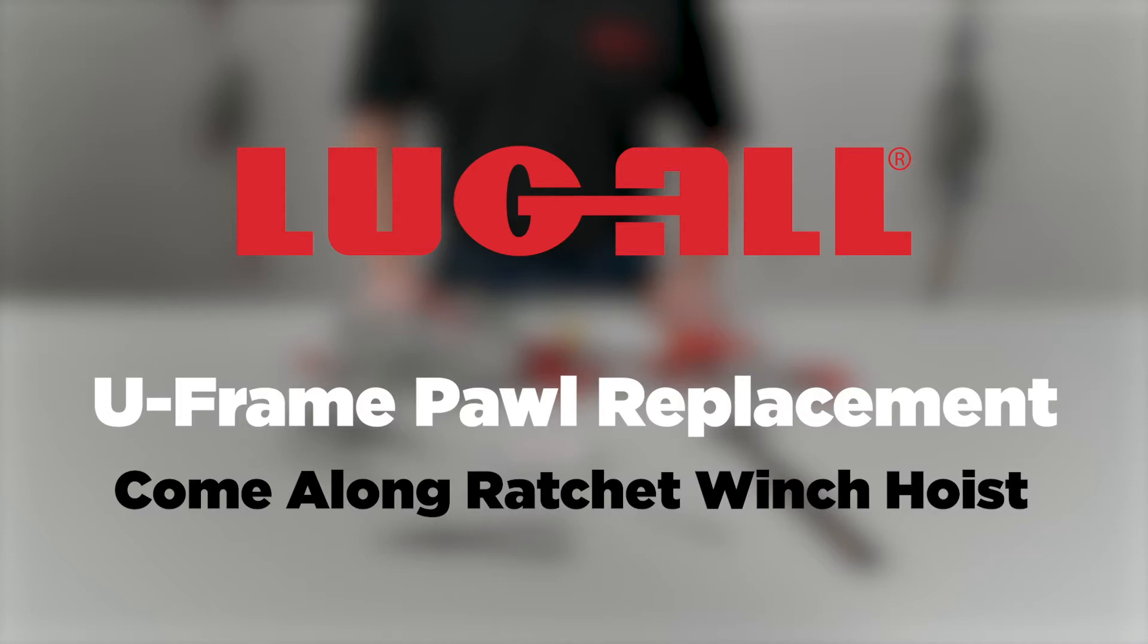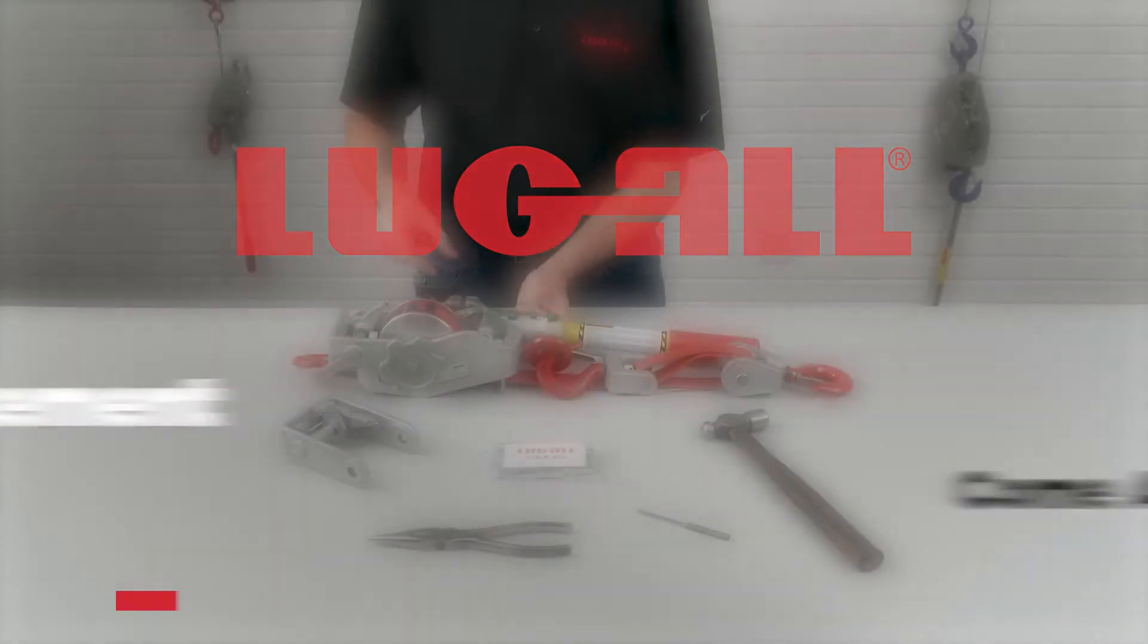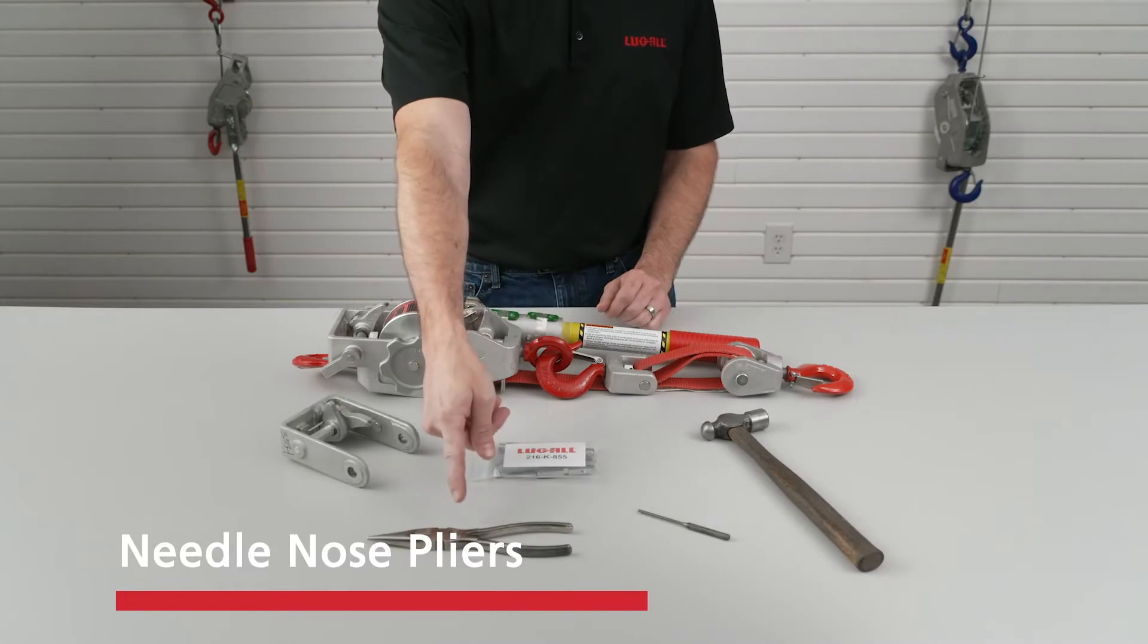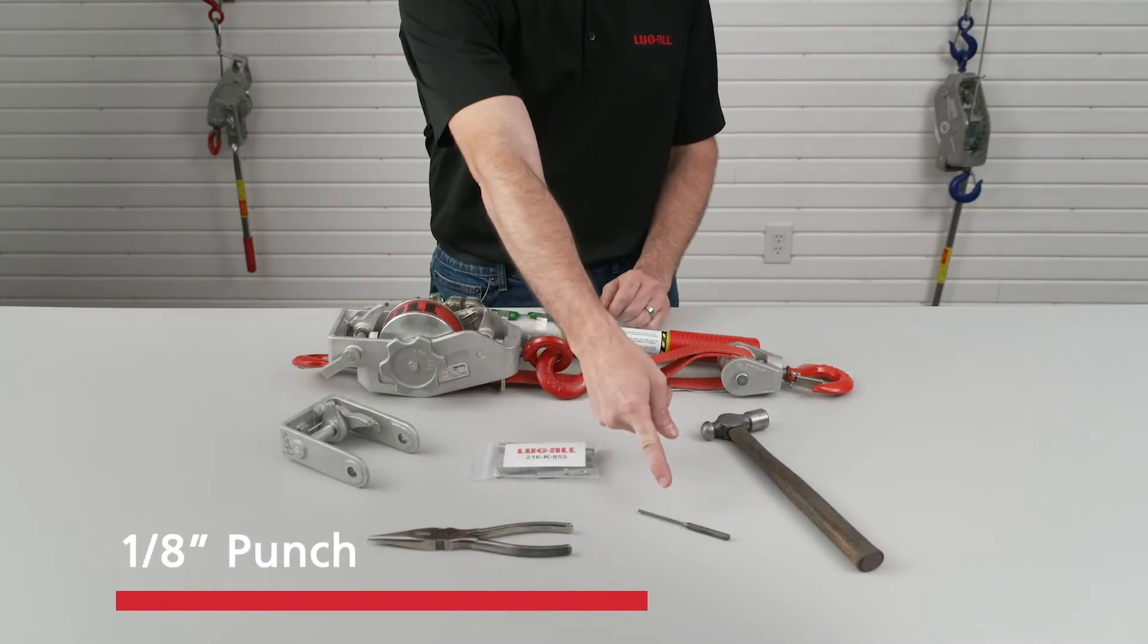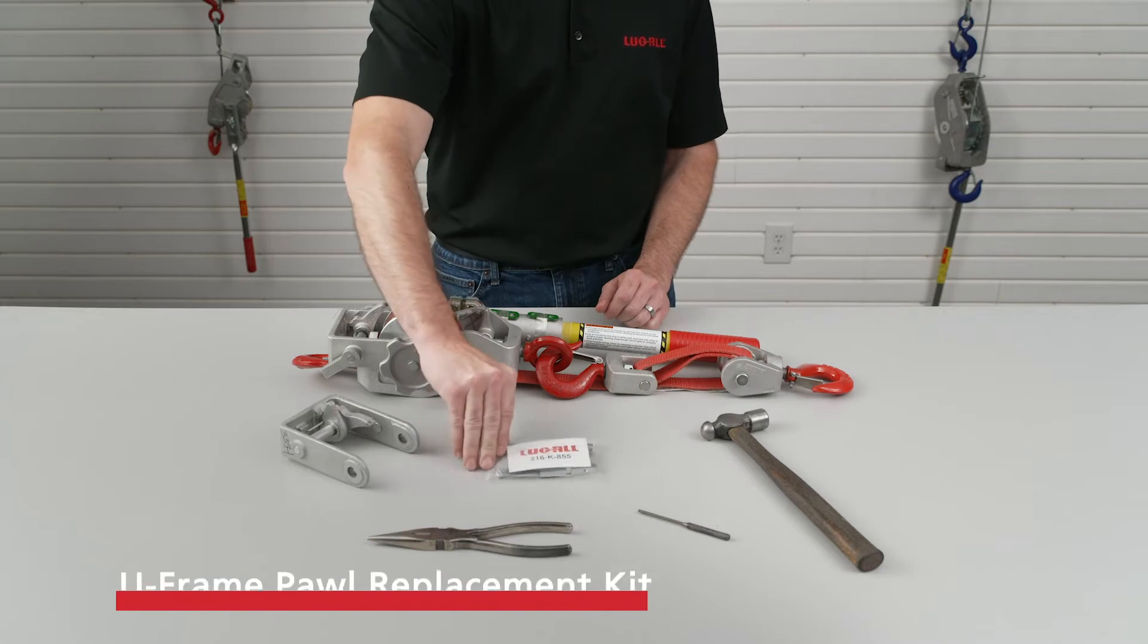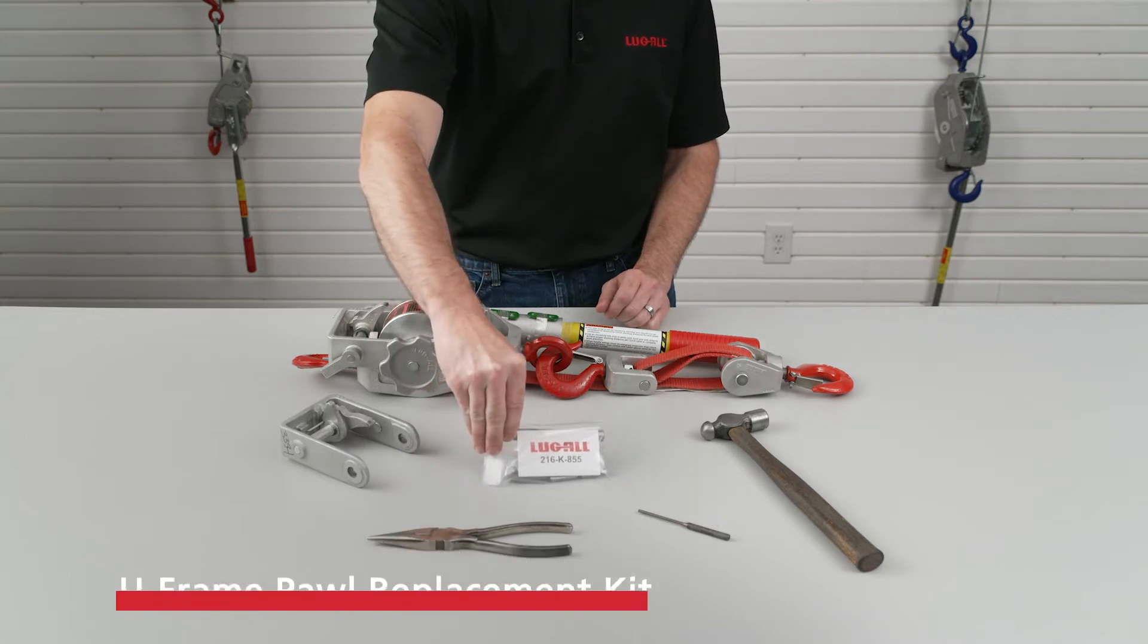To replace the U-Frame Pawl on a Lug-All Come-Along Ratchet Winch Hoist, you'll need a pair of needle-nose pliers, a 1/8-inch punch, and a hammer. You'll also need the U-Frame Pawl Replacement Kit for your winch hoist model.